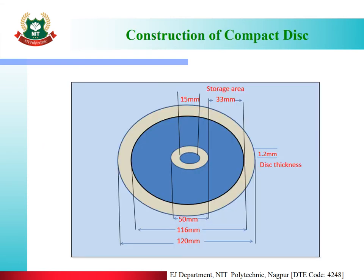Construction of compact disk: The storage area where information is stored runs from 50 mm outward. The disk thickness is 1.2 mm. The storage information extends up to 116 mm on the CD. The blue colored area represents the storage area, while black portions are blank. The overall CD size is 120 mm.